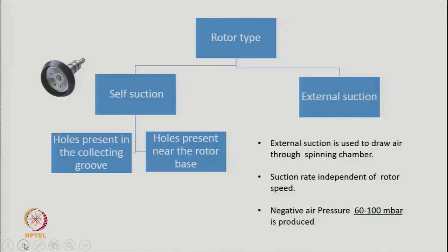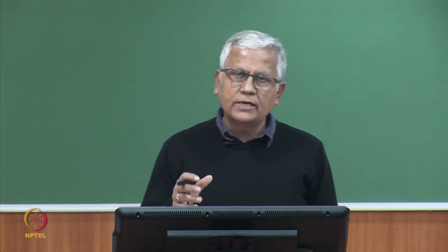The external suction unit draws air through the spinning chamber. The great advantage is that the suction rate is independent of rotor speed. In self-suction rotors, suction rate depends upon speed — higher speed means higher suction rate and vice versa. With an independent suction unit, this problem does not exist. A negative air pressure of 60 to 100 millibar is produced within the rotor chamber, causing air to be sucked from the atmosphere.